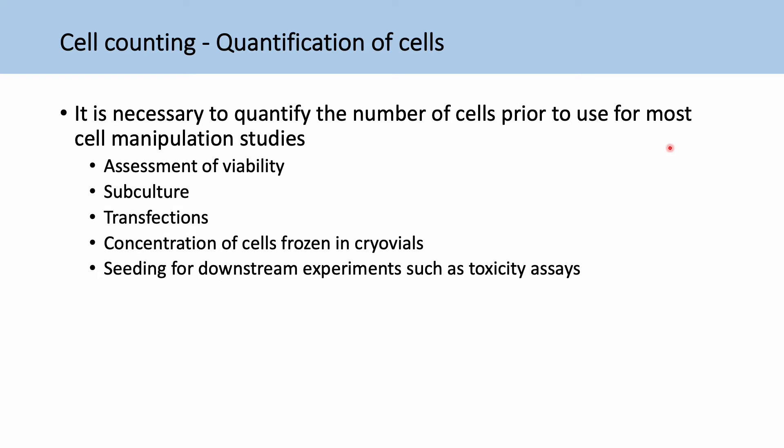And when we're seeding our cells for experiments like toxicity assays, we need to have a consistent number of cells for each replicate because if you start off with a different number of cells, you're going to get a different result in the end and your replicates won't be comparable.